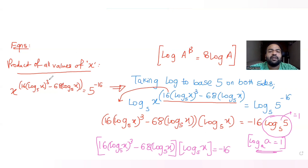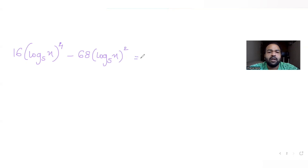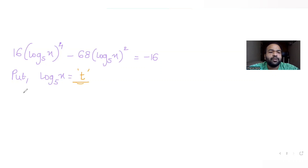Multiplying log x to the base 5 through both terms on the left, the equation becomes: 16 log x to the base 5 to the power 4, minus 68 log x to the base 5 squared, equals minus 16. Now I substitute t = log x to the base 5, giving: 16t⁴ minus 68t² equals minus 16.